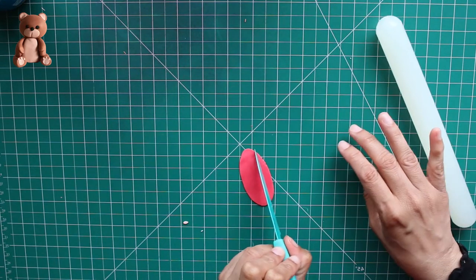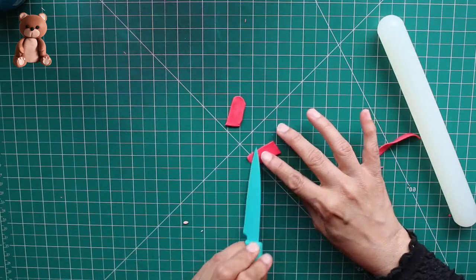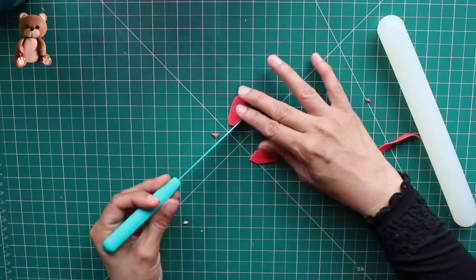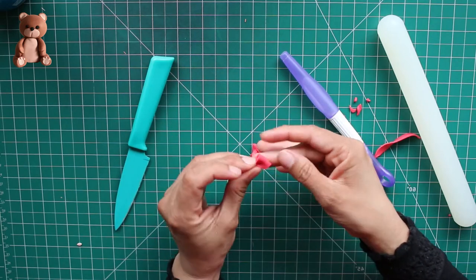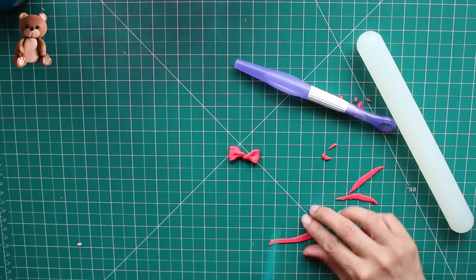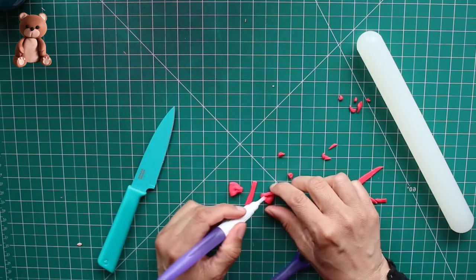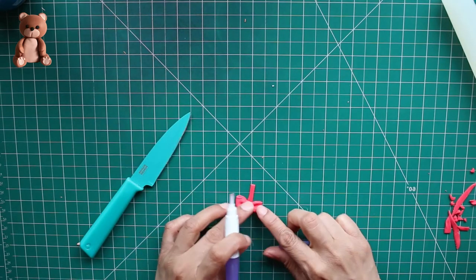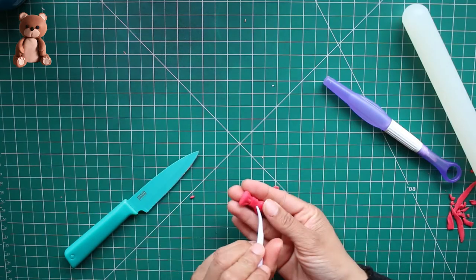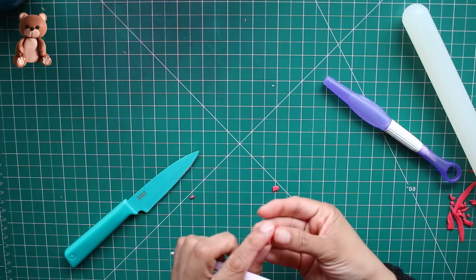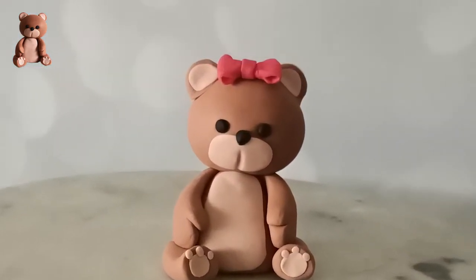Now I'll show you how to turn this basic cake topper into different cake toppers that you can use according to your needs. So I'm making a small, tiny little bow here for a cute little girl teddy bear. Just adding some details so that it looks like a little head bow. And there's your girl teddy bear.